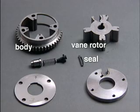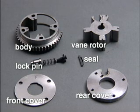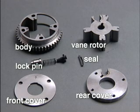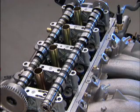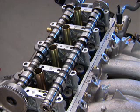The actuator also includes chamber seals, a lock pin assembly, and front and rear covers. A special VTC camshaft with extra oil passages directs oil pressure to the actuator.